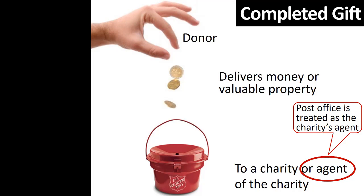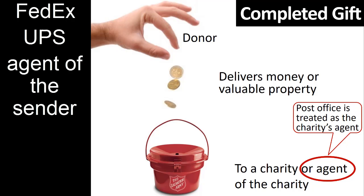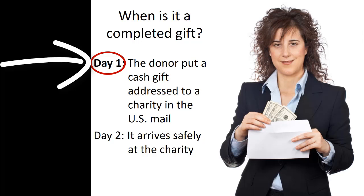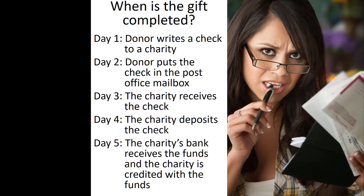Note that only the United States Postal Service is considered to be an agent of the recipient. If the gift had been delivered, for example, by FedEx or UPS, it would be considered as held by an agent of the donor until it arrived at the charity. Because the donor has delivered money to an agent of the charity — in this case, the United States Postal Service — on day one, the gift was a completed gift for income tax purposes on day one.